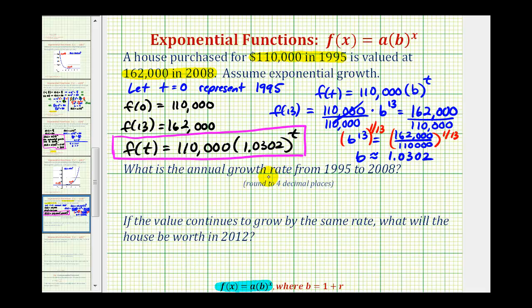Now to answer this first question, what is the annual growth rate from 1995 to 2008? Remember the base is equal to 1 plus r, where r is the growth rate expressed as a decimal. So in this case, 1.0302 must equal 1 plus r, so subtracting 1 on both sides of the equation, we have r is equal to 0.0302 expressed as a decimal. Our growth rate is 3.02% per year from 1995 to 2008.